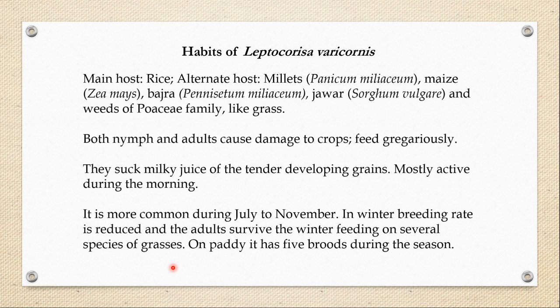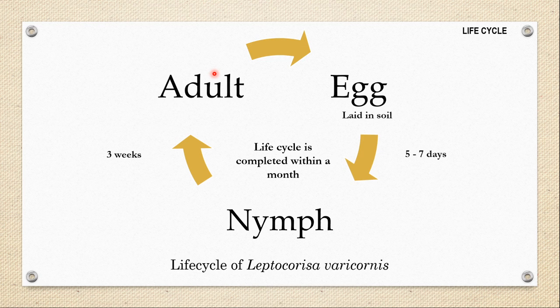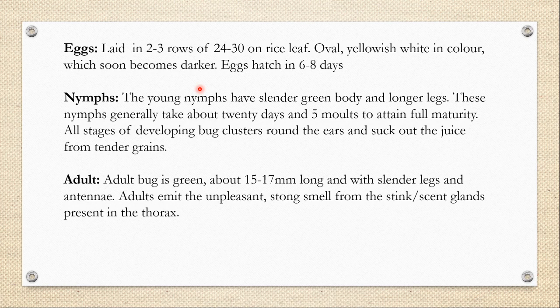In winter, the adults feed on several species of grass. On paddy, the main host of Leptocoryza variconis, it has five broods during the cultivation season. For any hemipteran insect, the life cycle includes three stages: the adult stage, the egg stage, and the nymphal stage. The females lay eggs, which hatch into nymphs that go through five moults — sometimes four — and then the last nymphal instar emerges as the adult. In Leptocoryza variconis, eggs take about five to seven days to hatch, and the nymph takes about three weeks and five moults to become the adult.